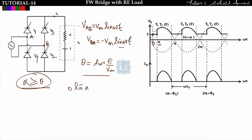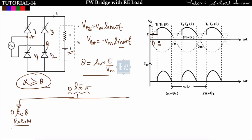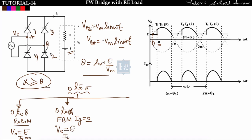From 0 to π, consider two sub-intervals. From 0 to θ: supply voltage is less than E, so thyristors T1 and T2 are in reverse blocking mode and won't conduct. Output voltage equals E and i₀ = 0. From θ to α: supply voltage is greater than E, so T1 and T2 are in forward blocking mode, but we are not yet triggering them (gate current = 0). Output voltage still equals E and i₀ = 0.